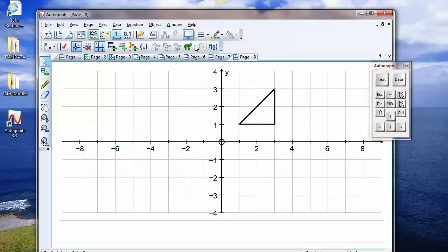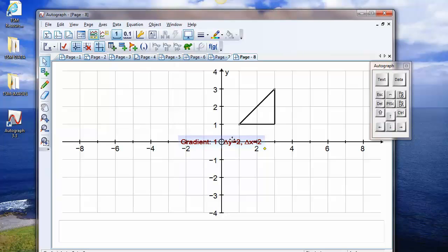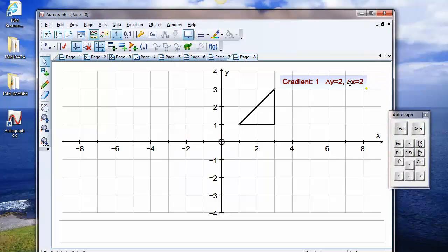If I select this object and go to the text box, you can see it gives me the value of the gradient. It also gives the change in y and the change in x. Some students may not be ready for delta notation, but you can explain what it means. This distance equals this distance, so the gradient is 1, so that angle is 45 degrees.